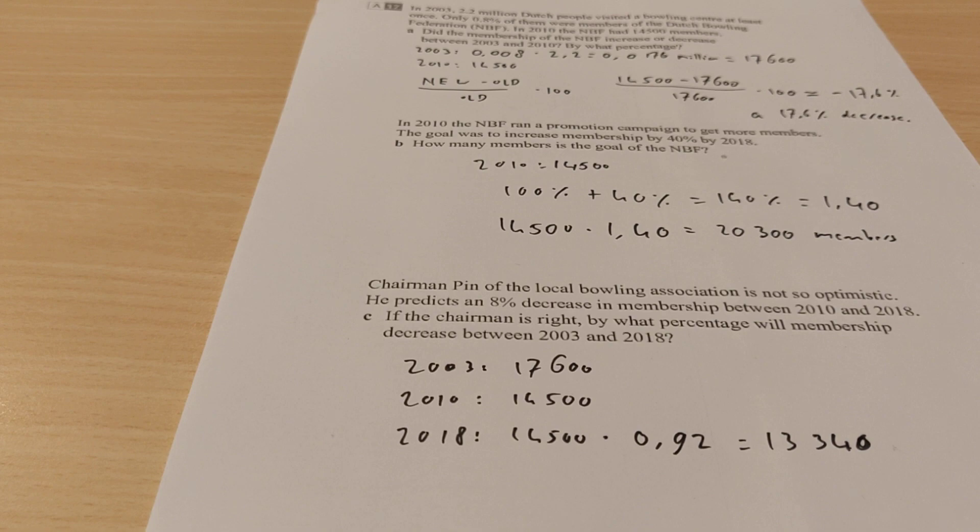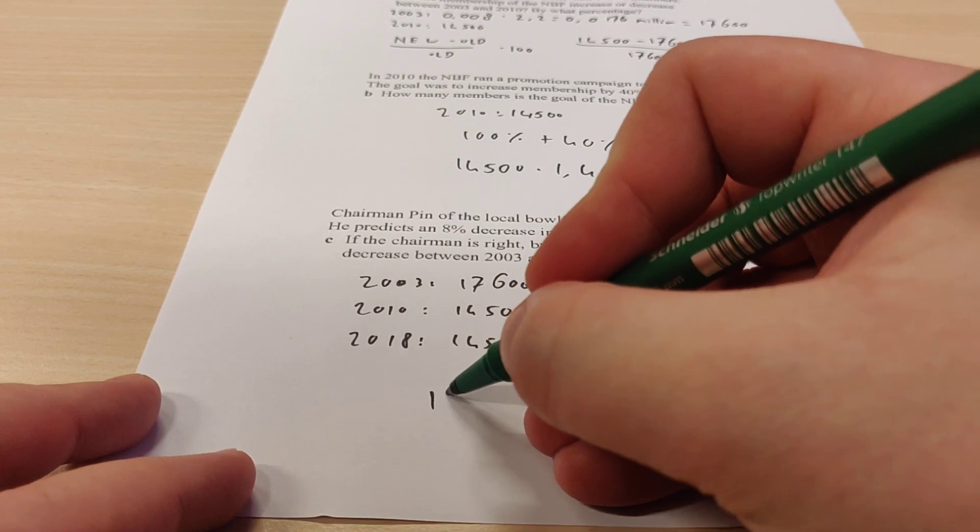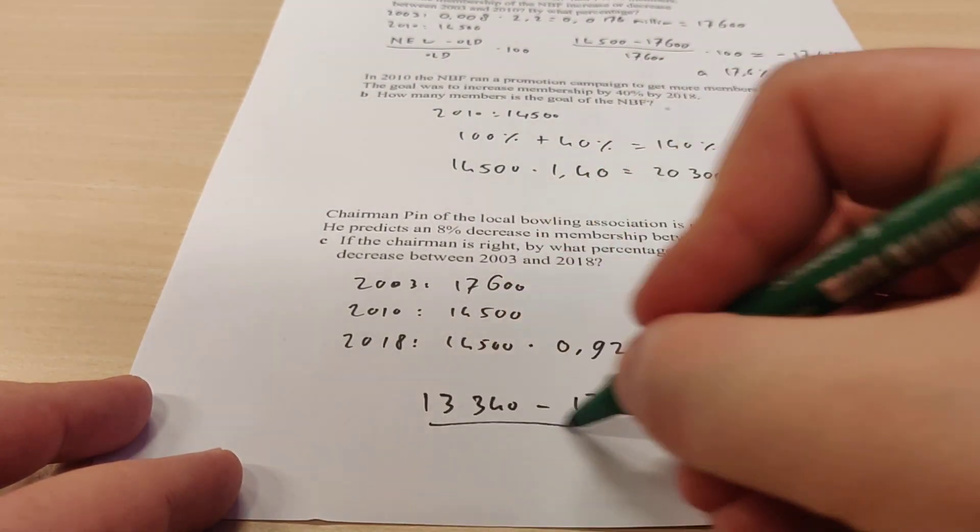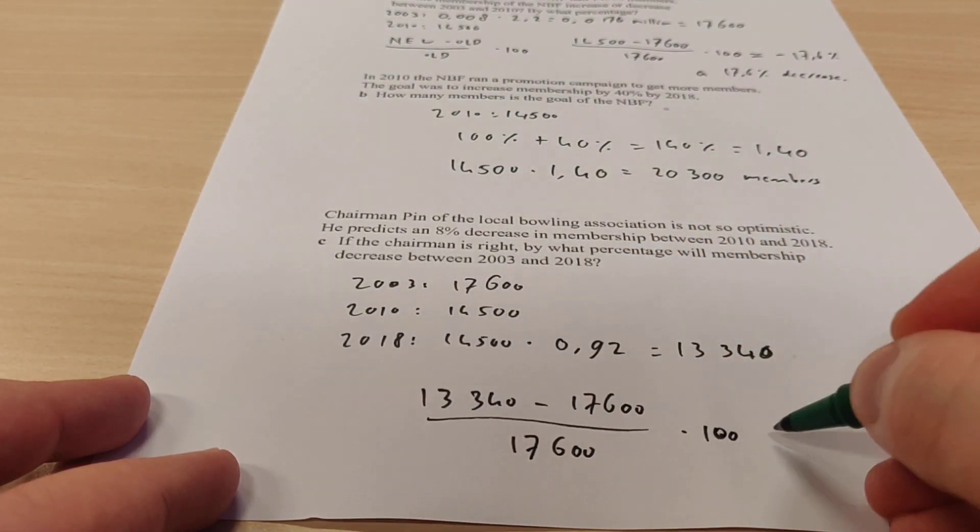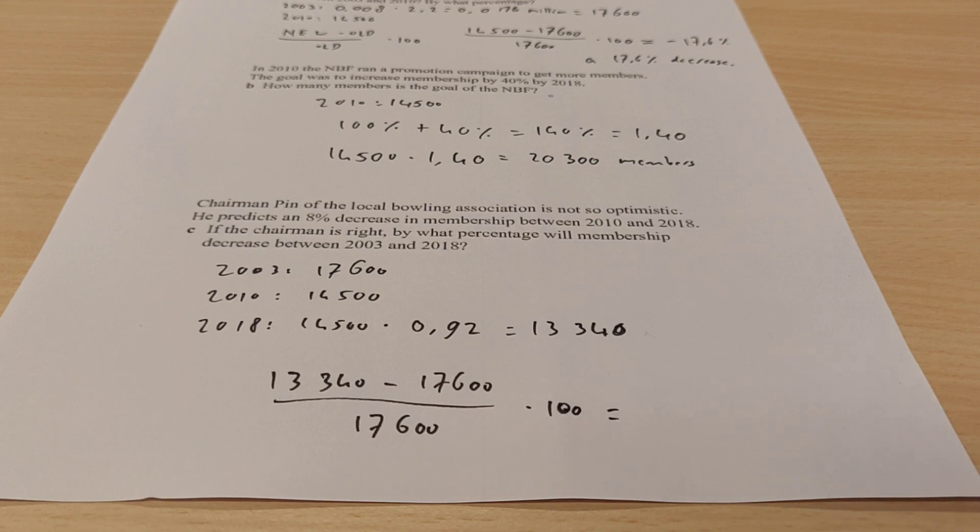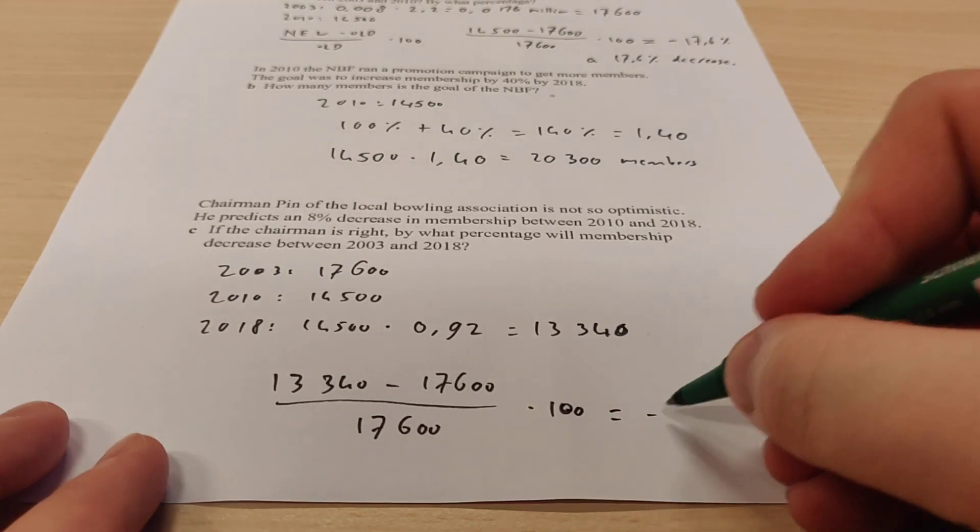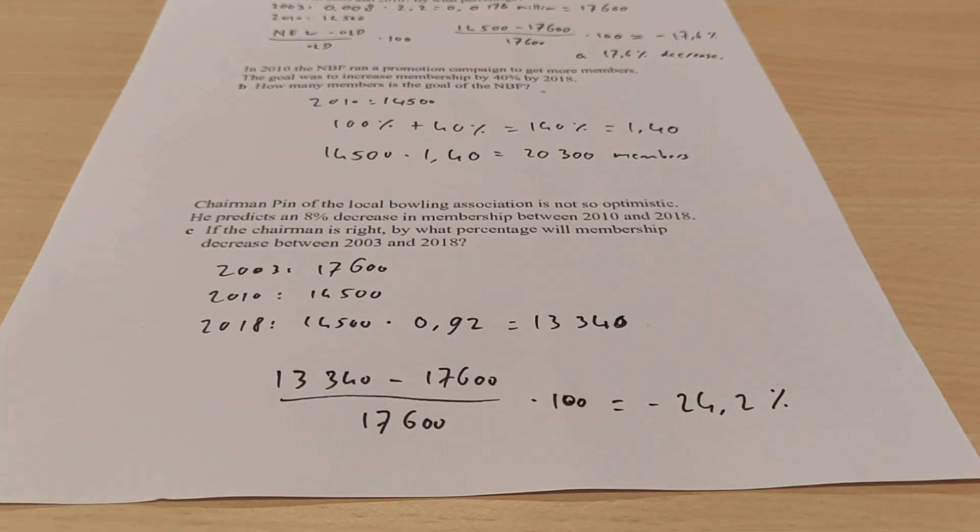And then we want to know, what is the percentage decrease between 2003 and 2018? So then we do new, which is 13,340, minus old, which is 17,600, divided by old, which is 17,600, and then times 100. And then we have, let me see what this will be. I have to type it into the calculator over here. It will be a decrease of 24.2%. And the minus suggests that it's a decrease.